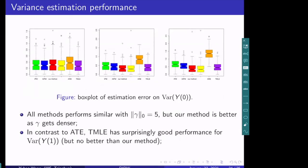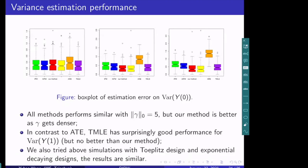Another interesting phenomenon observed from the variance estimation part: in contrast to other methods, TMLE has surprisingly good performance for estimating the variance of Y(1), but it is still not better than our method. We also tried simulations on a Toeplitz design and an exponential decaying design, and the other results perform similarly.